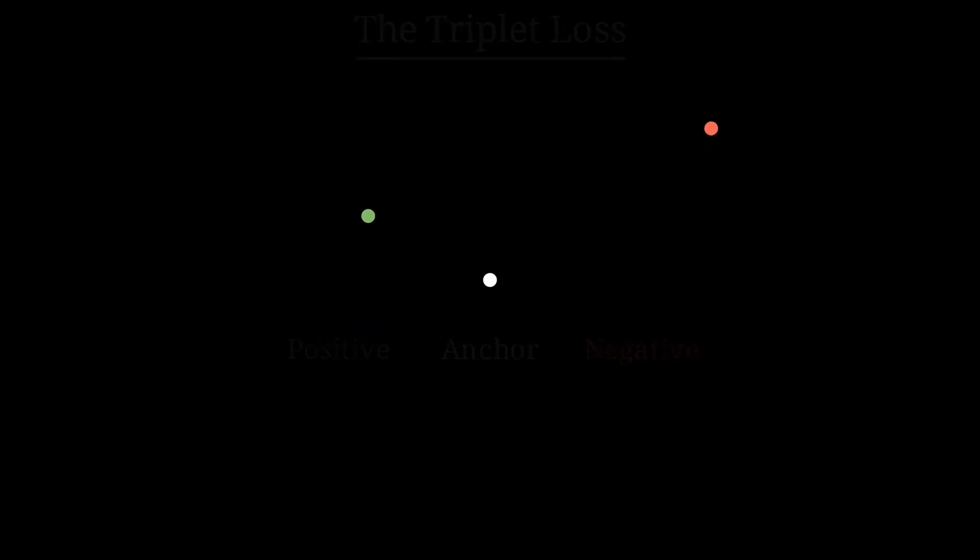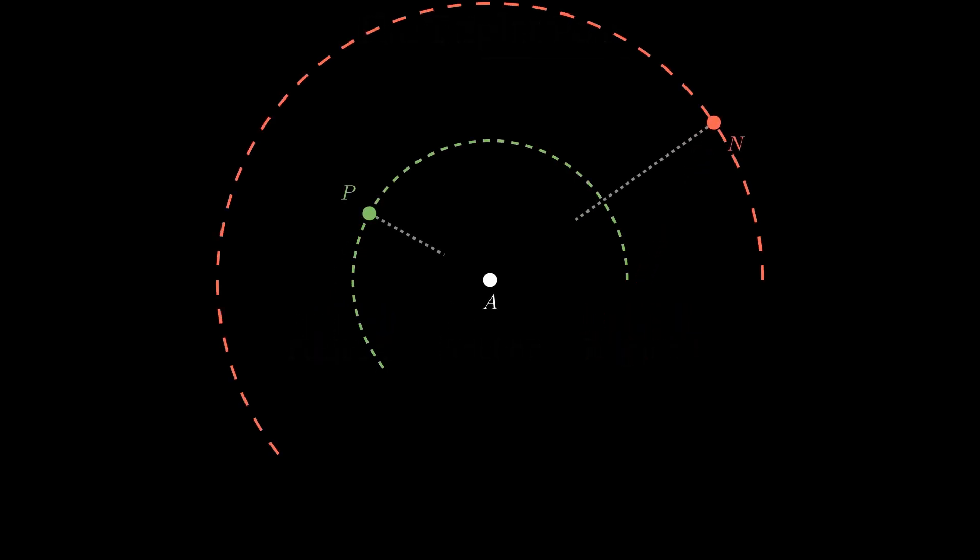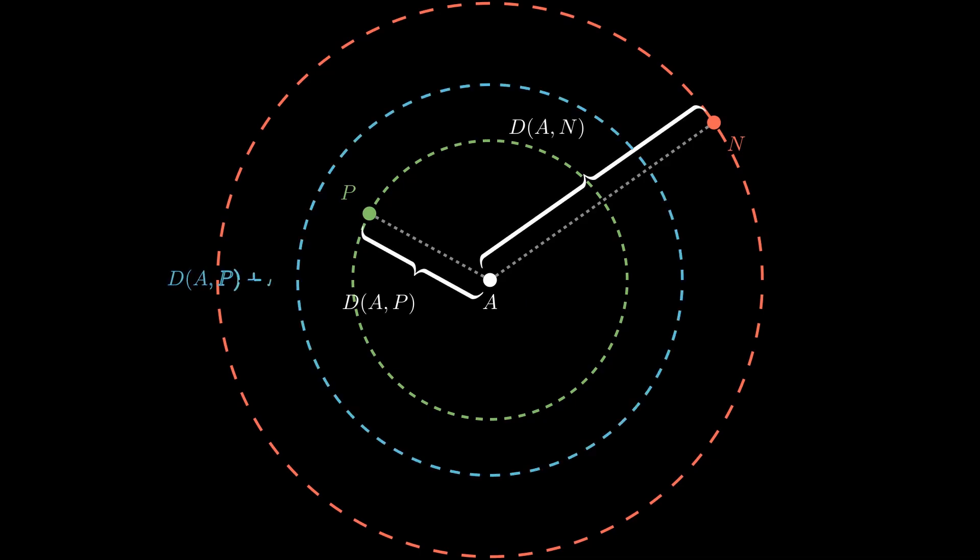The goal of the triplet loss is to ensure that the distance between the anchor and the negative is at least as big as the distance between the anchor and the positive, plus a safety margin that we note as m.